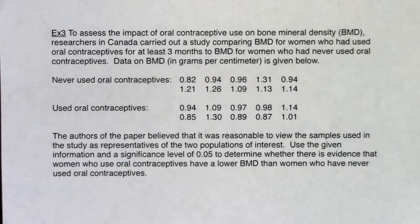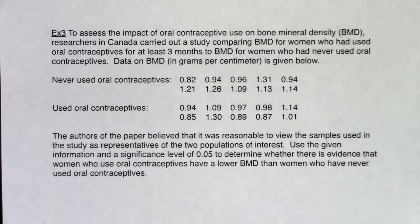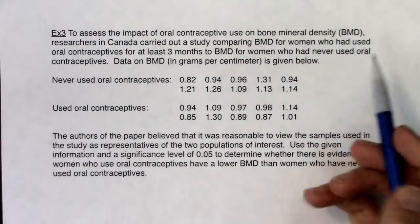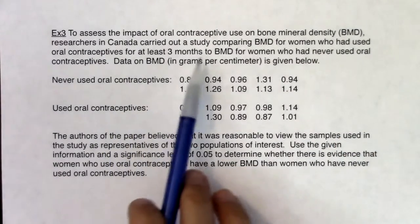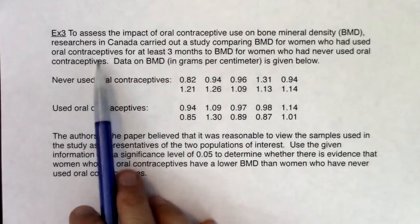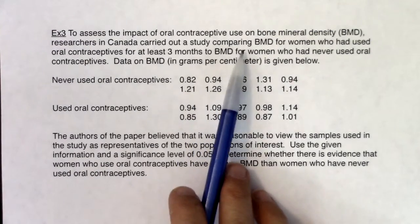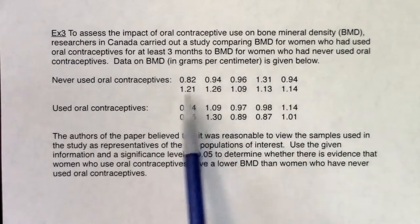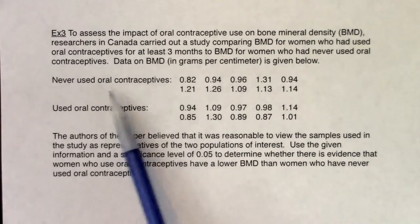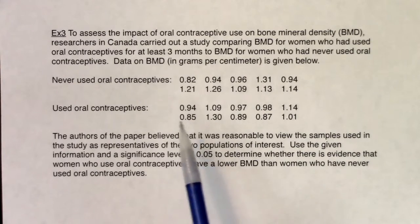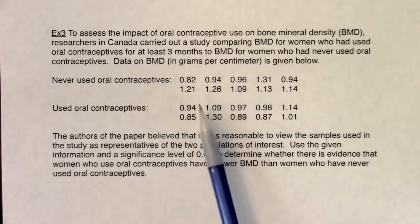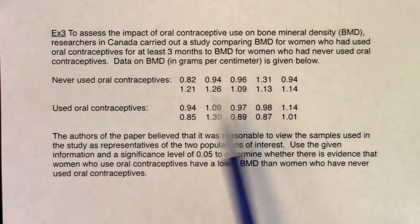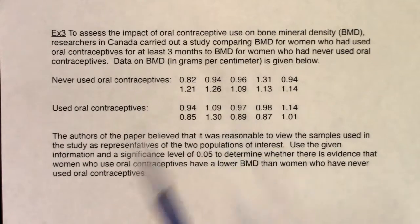All right, let's take a look at our next problem. As always, let's figure out what the variable is — is it numerical or categorical, or can we classify it directly as mean land or proportion land? To assess the impact of oral contraceptive use on bone mineral density (BMD), researchers in Canada carried out a study comparing BMD for women who had used oral contraceptives for at least three months to the BMD for women who had never used oral contraceptives. Data on BMD in grams per centimeter is given. We're trying to figure out if your bone mineral density is the same or different depending on whether you've used the pill — does that mean you're going to have weaker bones, stronger bones, or the same bones?